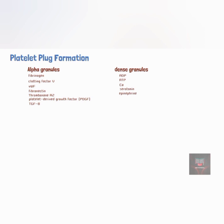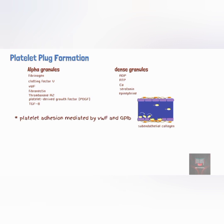The steps involved in the formation of a platelet plug can be summarized as follows: destruction of the endothelium of the blood vessels will expose the subendothelial collagen fibers. Von Willebrand factor then binds glycoprotein 1b on the platelet to the subendothelial collagen. This process is referred to as platelet adhesion.